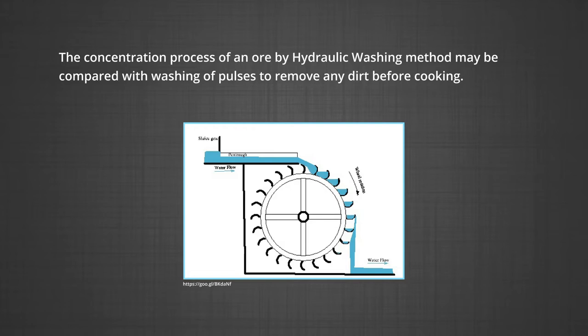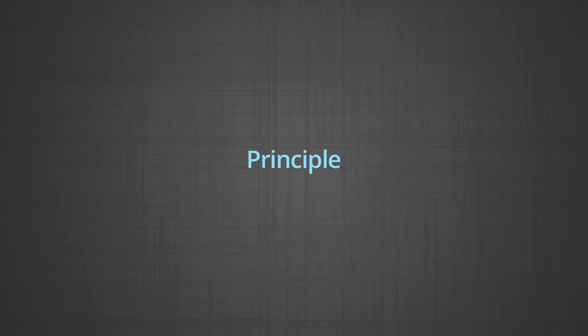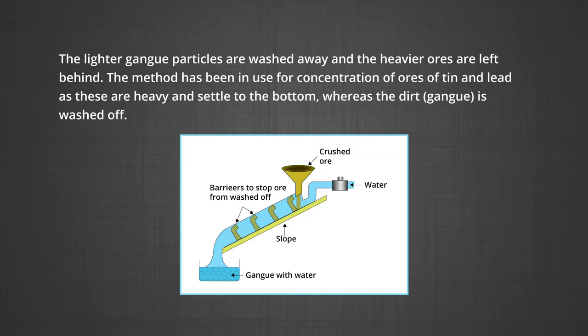Next, hydraulic washing. The concentration of an ore by hydraulic washing may be compared with washing of pulses to remove any dirt before cooking. The principle is difference in gravities of the ore and the gangue particles — it is therefore a type of gravity separation method. In one such process, an upward stream of running water is used to wash the powdered ore. The lighter gangue particles are washed away and the heavier ore particles are left behind. This method has been in use for concentration of ores of tin and lead.